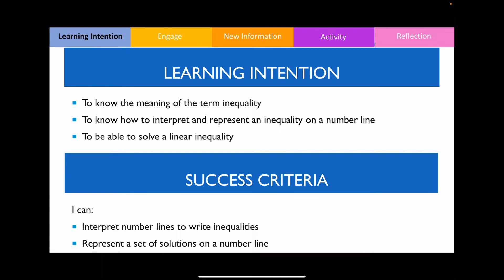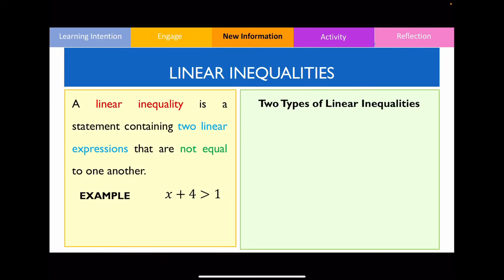So let's start off by defining what is a linear inequality. A linear inequality is a statement that contains two expressions that are not equal to one another. I've got an example of a linear inequality below. Notice over here you've got an example of an inequality symbol, and there are four inequality symbols that you need to be able to understand.